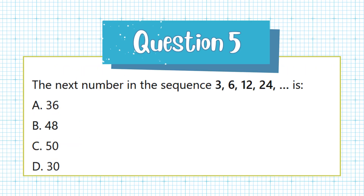Question 5. The next number in the sequence 3, 6, 12, 24 is: a. 36, b. 48, c. 50, d. 30.